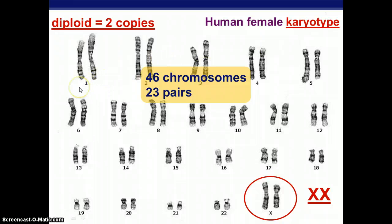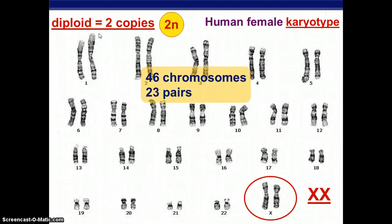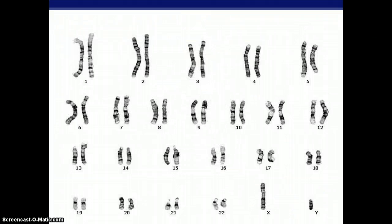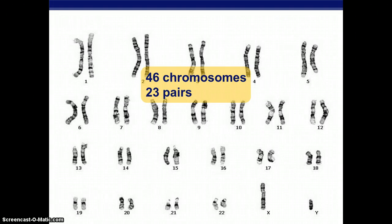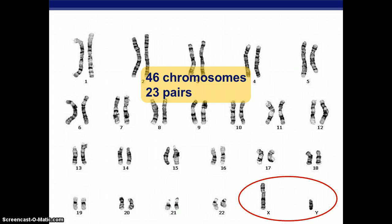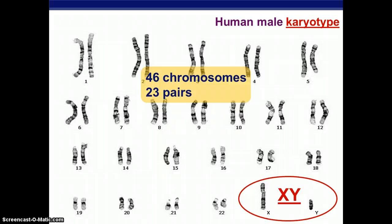Chromosomes, as you can see, come in pairs — there are two copies of each chromosome. This is called diploid and can be written as 2N. Now if we map out another karyotype, again there are 46 chromosomes with 23 pairs, but the 23rd pair has one X and one Y instead of two X's. This indicates a male karyotype. Each chromosome still has two copies, so it is diploid.